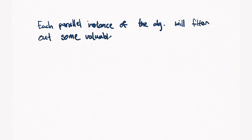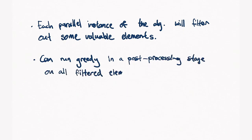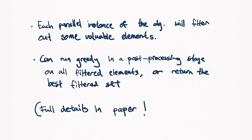Now, the algorithm is essentially complete. Each parallel instance of the algorithm will filter out some set of valuable elements. Whenever we get a query, we can either run greedy on the union of these filtered elements or we can return the best filtered set. The full details can be found in the paper.